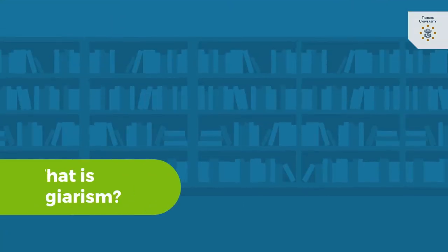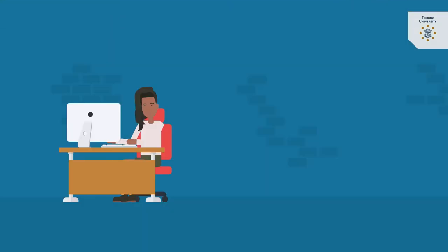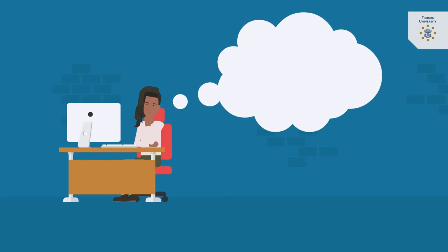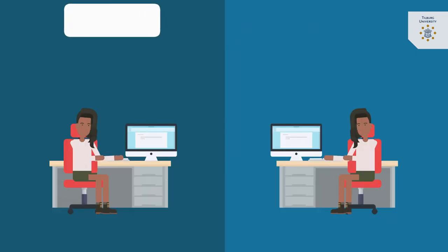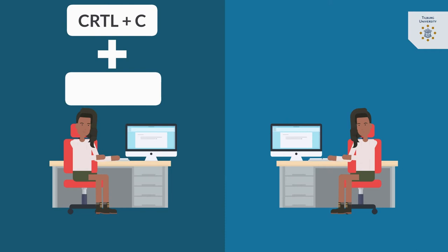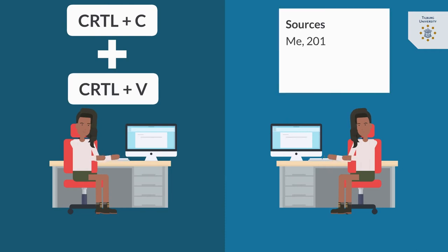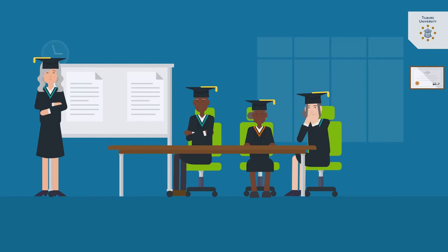What is plagiarism? Plagiarism is when you make something appear to be your own work when, in fact, it is not — carelessly or without proper acknowledgement of the source, copying data, texts and other people's reasoning or thoughts. According to the rules and guidelines for the examination board and in the Tilburg University Code of Conduct, this is considered fraud.